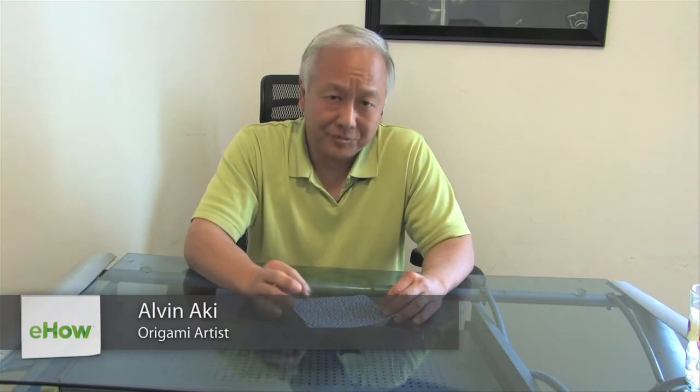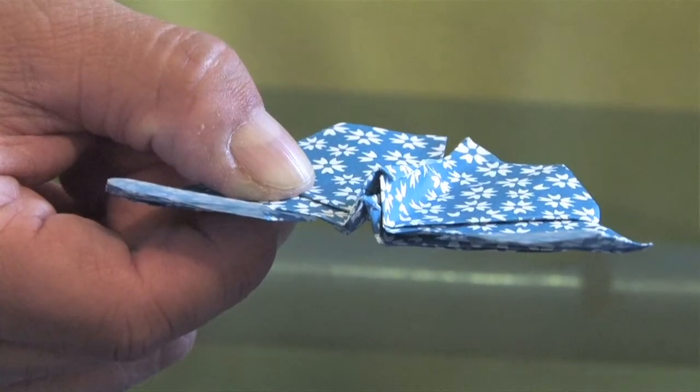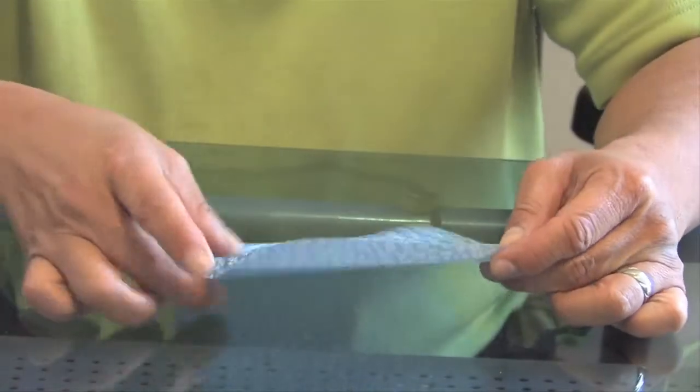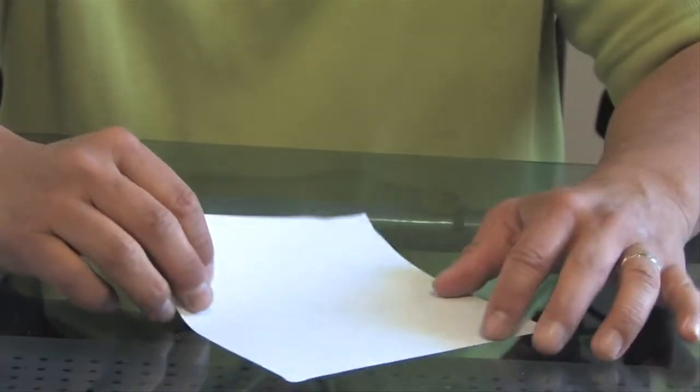This is Al Aki with Origami by Aki, and today we're going to make the beautiful Origami Butterfly. We're going to start with a square sheet of paper, and you only need to have color on one side.